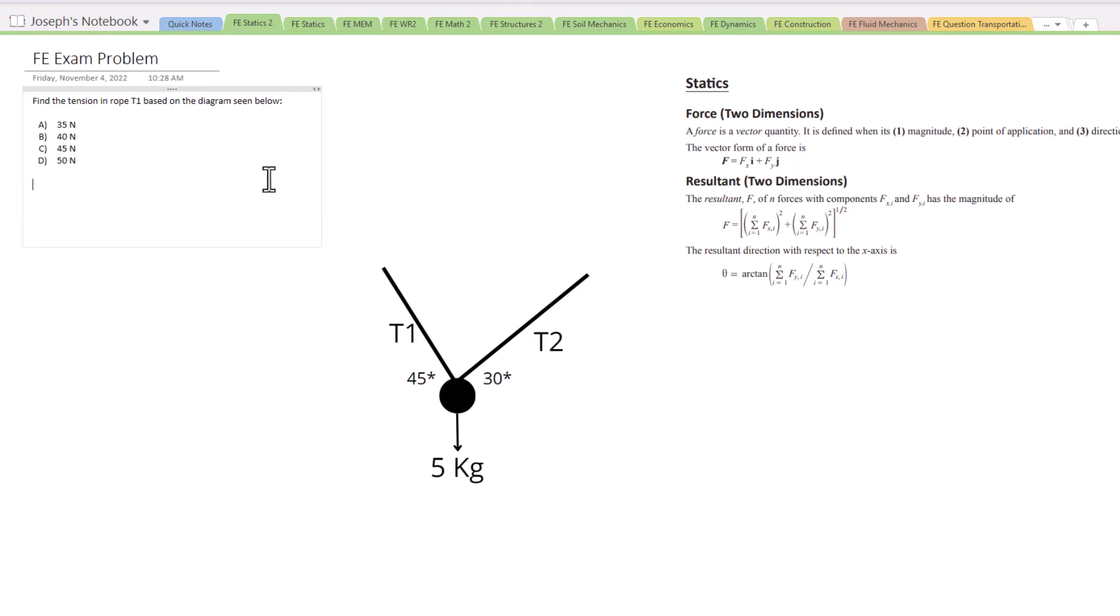So if we want to solve sum of the forces in the x direction equals, now let's think about this here. We have T1 and T2. Those are forces going in the x direction. T1 is pulling in the negative direction. So we have T1 times the cosine of 45 degrees. Plus, and that's actually going to have a negative sign since that's pulling in the negative direction.